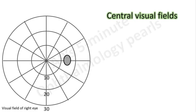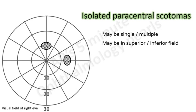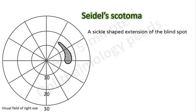The earliest visual field defects are isolated paracentral scotomas. These may be in the superior or inferior field. All the other field defects are believed to be due to enlargement and coalescing of these scotomas. A Seidel scotoma is a sickle shaped extension of the blind spot. It can occur either superiorly or inferiorly.